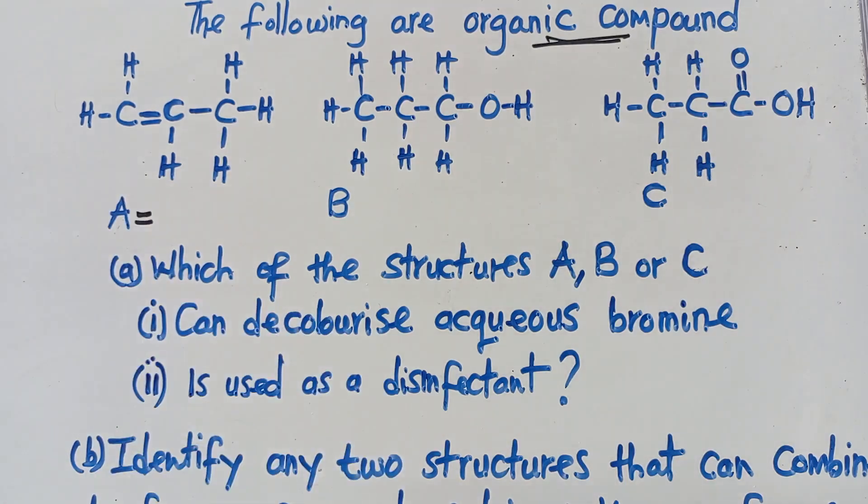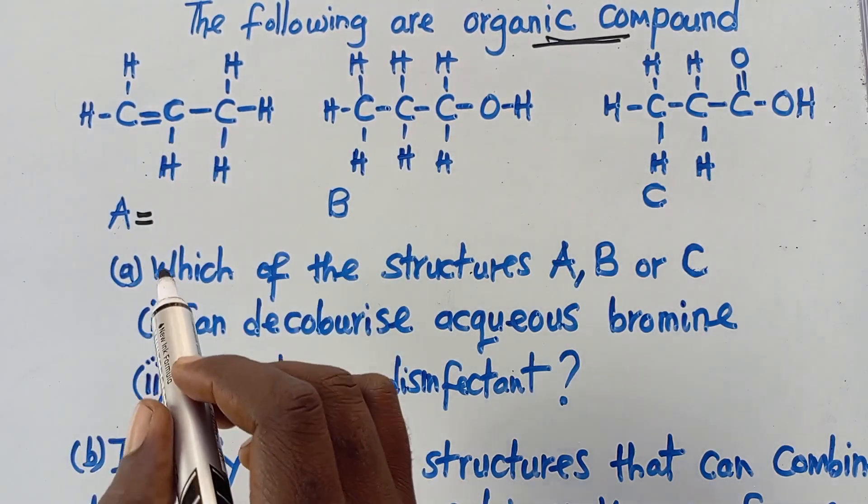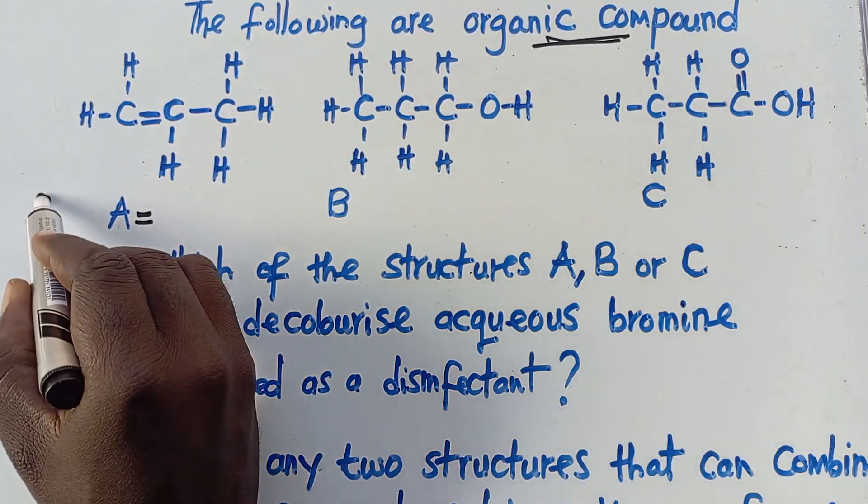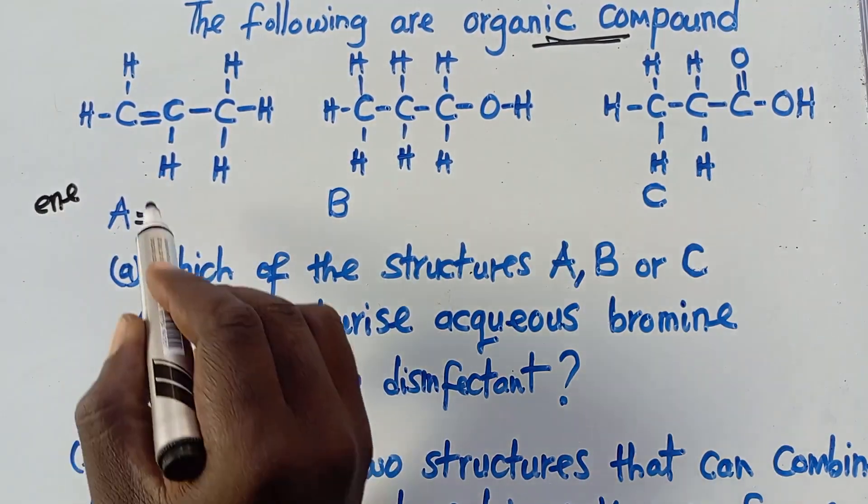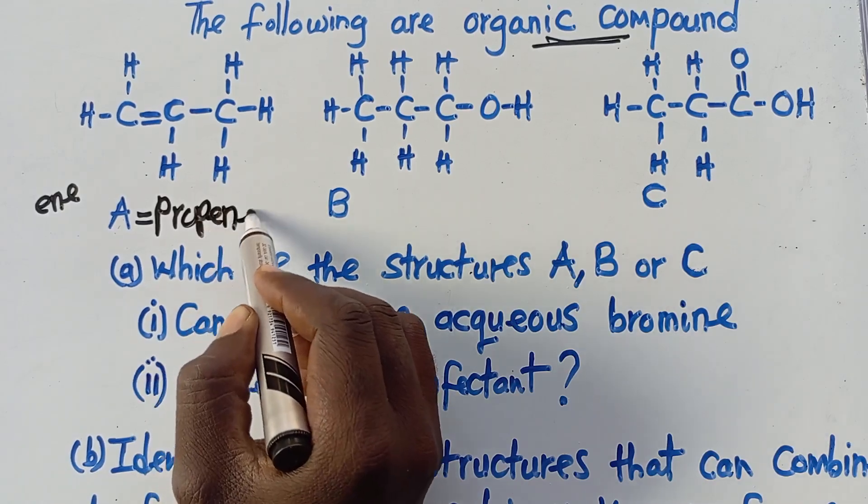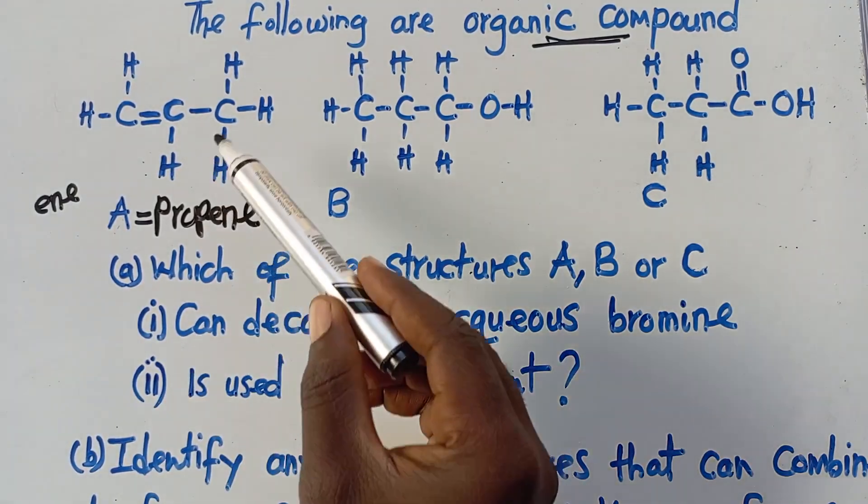So how can we answer this one? One, two, three. I told you if you are having three carbons, the name should start with prop. Since it is an alkene, all alkenes end with ene. So from this word, prop, we are going to say propene. So this is propene.